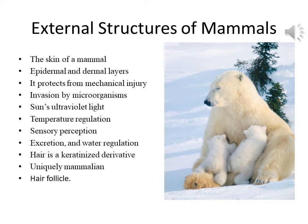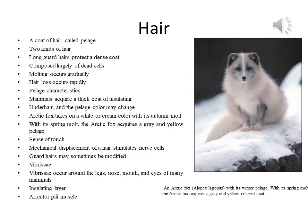Hair is seated in an invagination of the epidermis called a hair follicle. A coat of hair is called pelage and usually consists of two kinds of hair: long guard hairs, which protect a dense coat of shorter insulating under-hairs. Because hair is composed largely of dead cells, it must be periodically molted. In some mammals like humans, molting occurs gradually and may not be noticed.